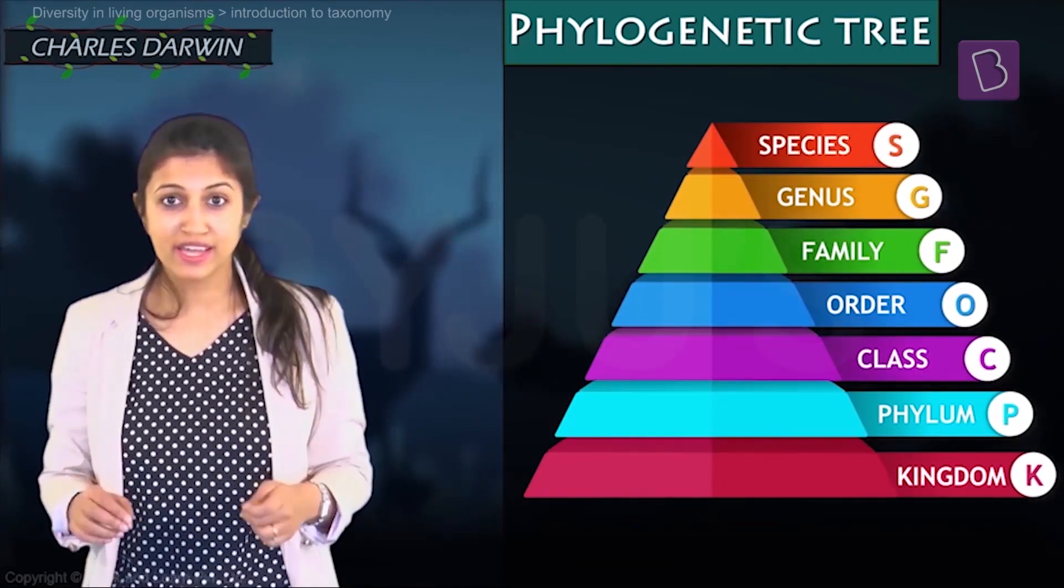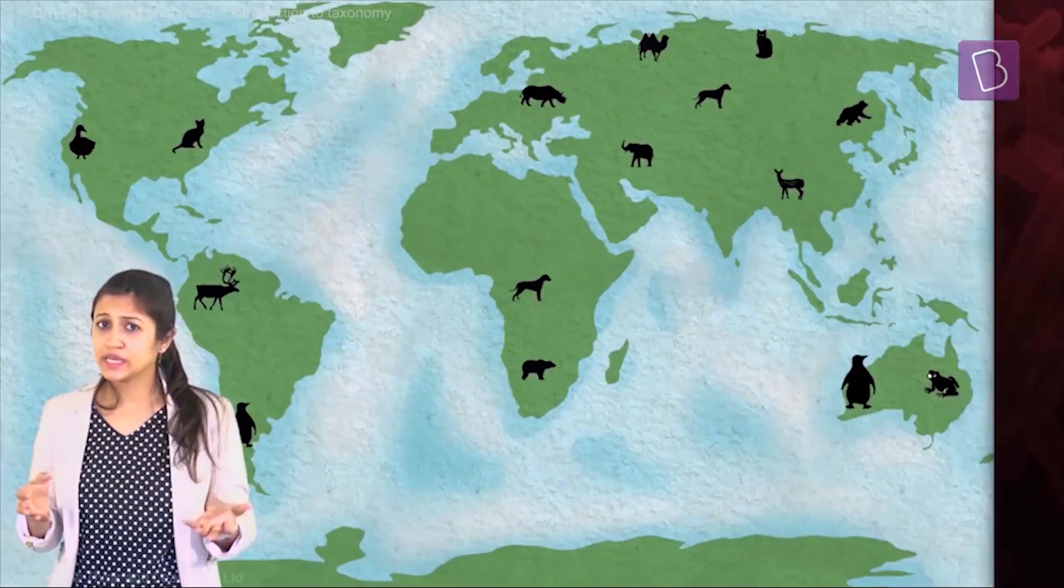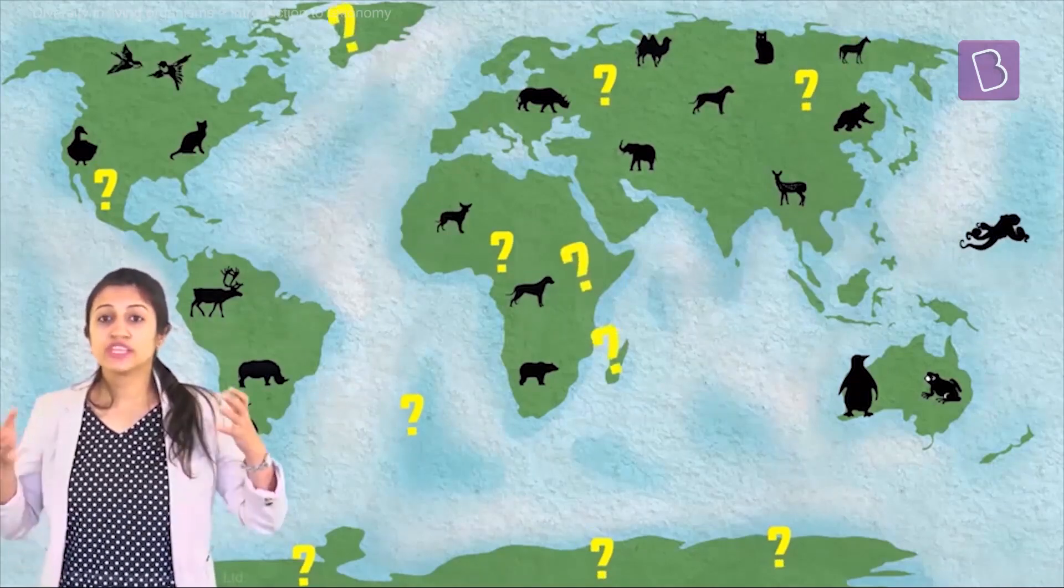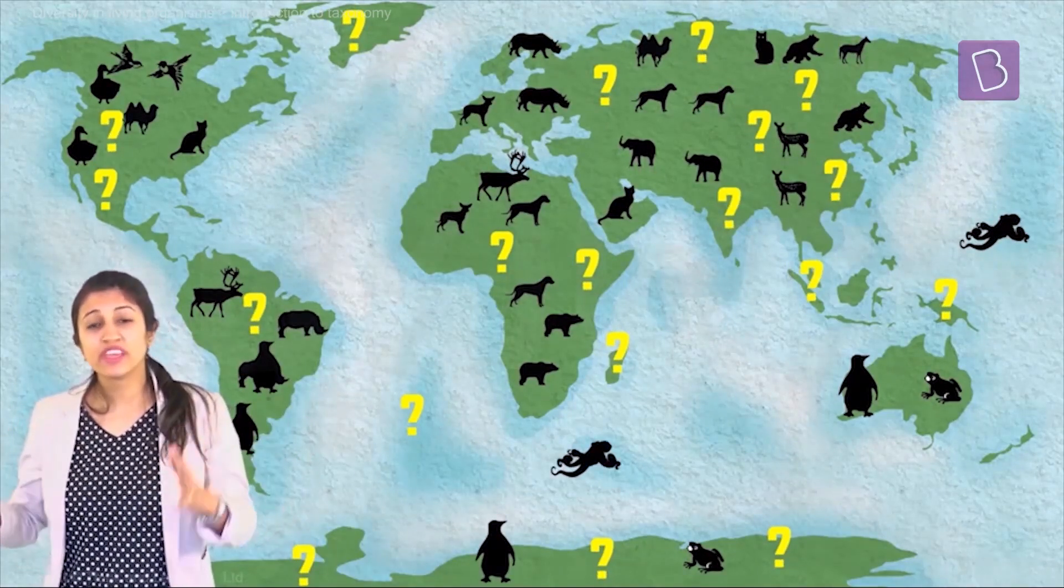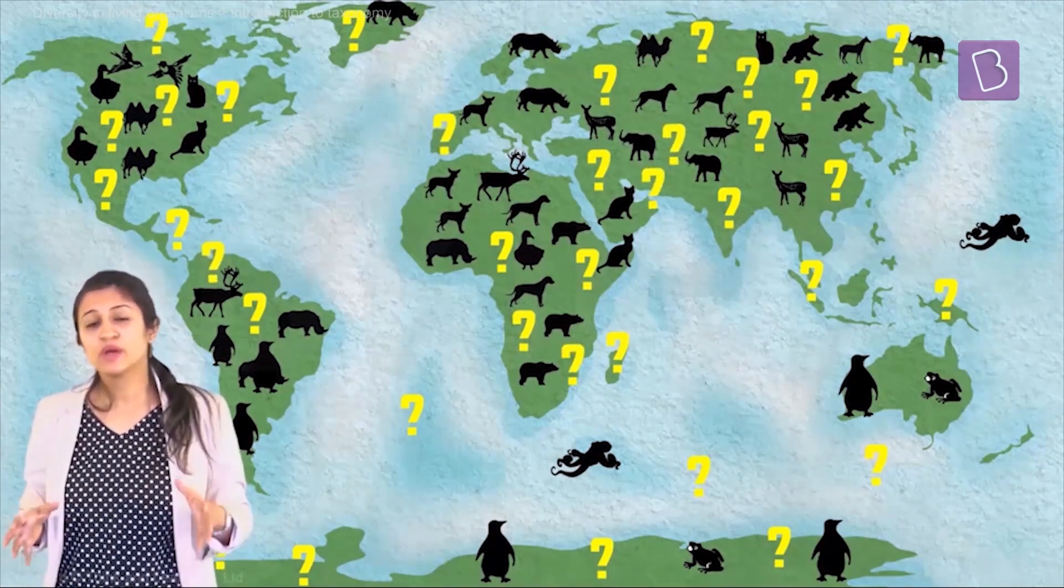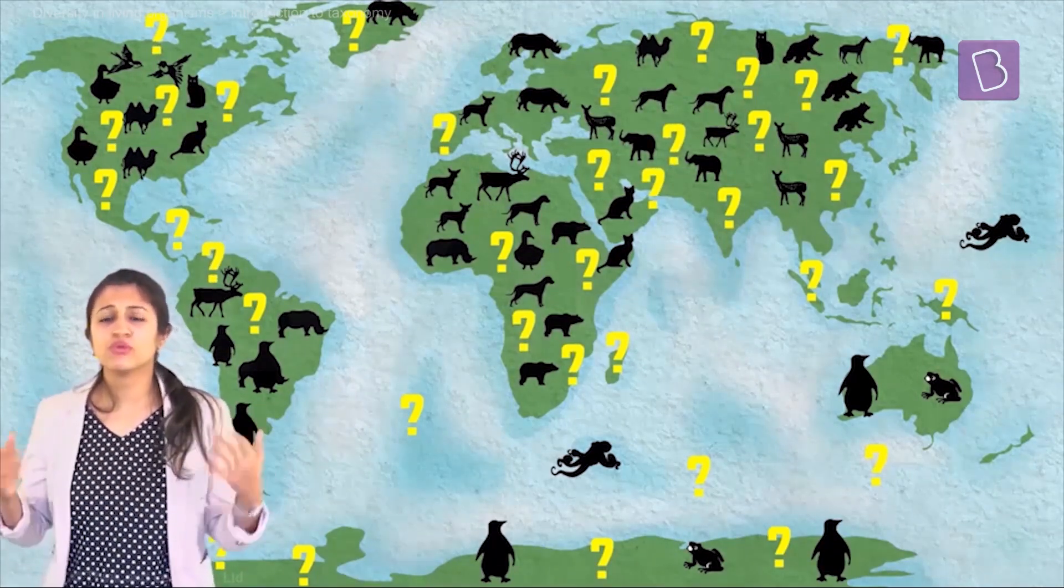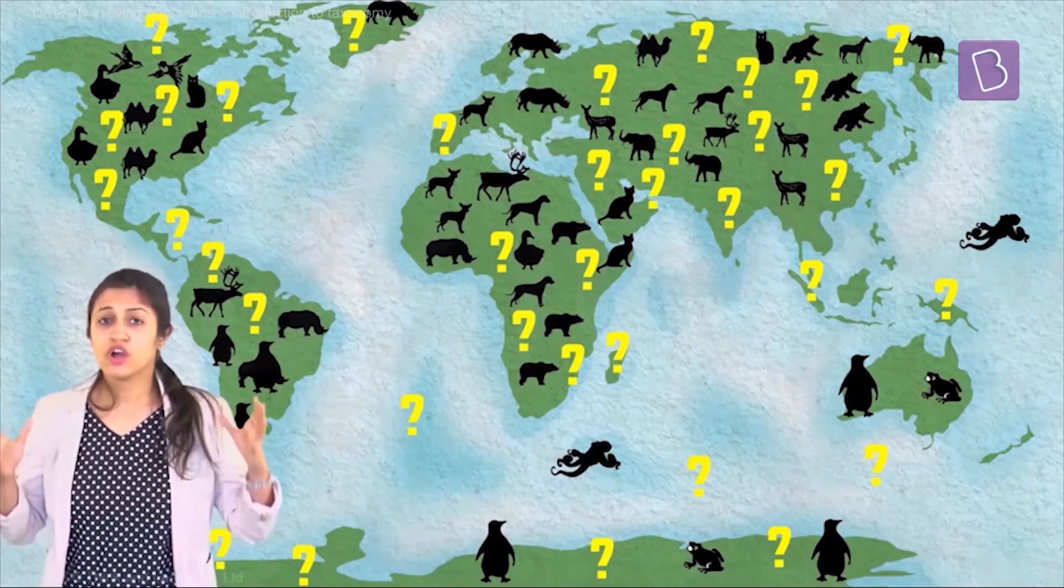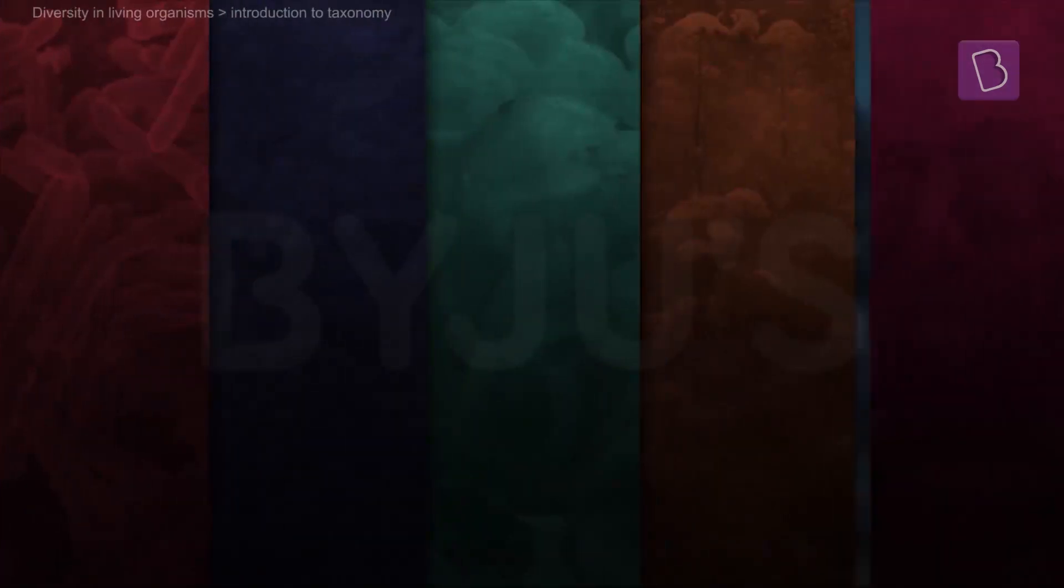Species actually keep getting discovered all the time, so the 8 million species can become 10, 12, or even 50 million. All this gives scientists a really hard time because it actually gives them so many more organisms to keep track of. Now, this is the system that we've been using for 250 years.